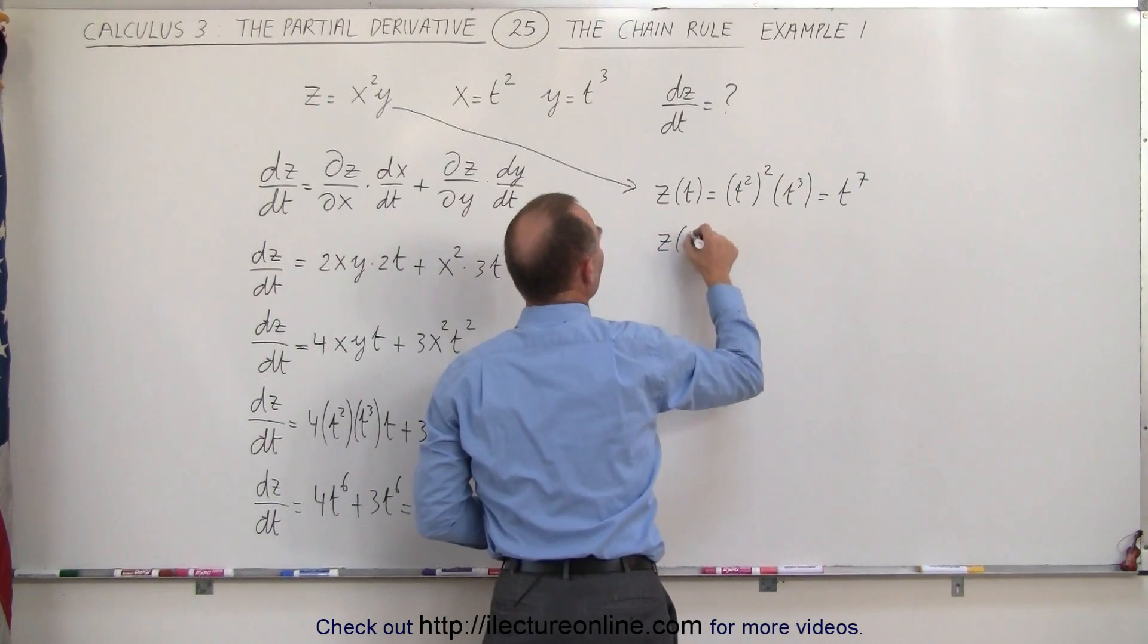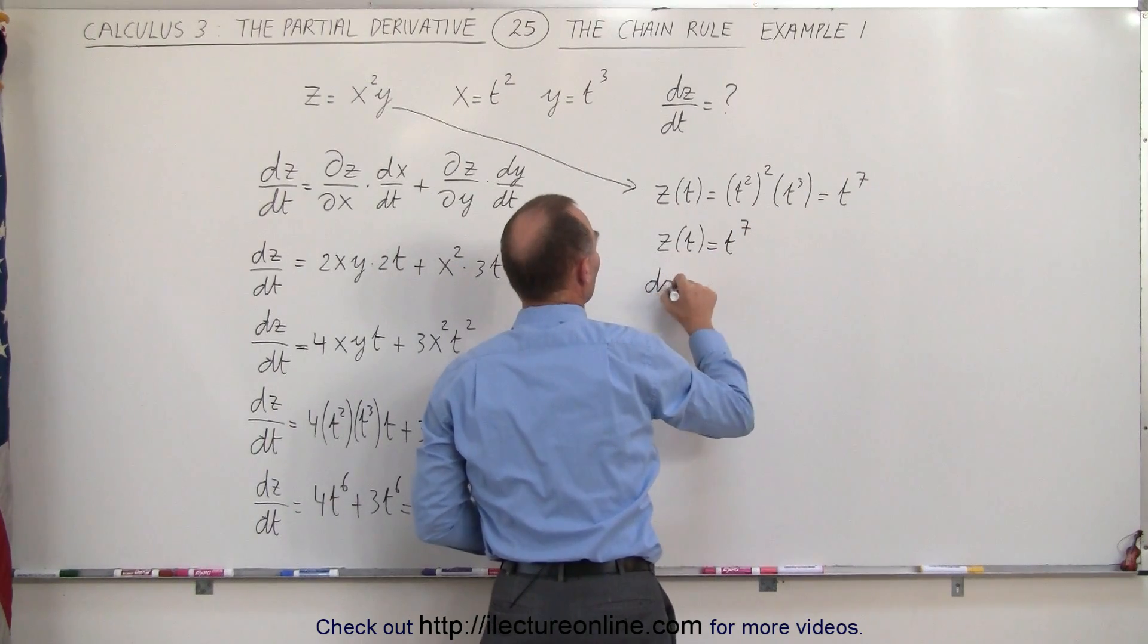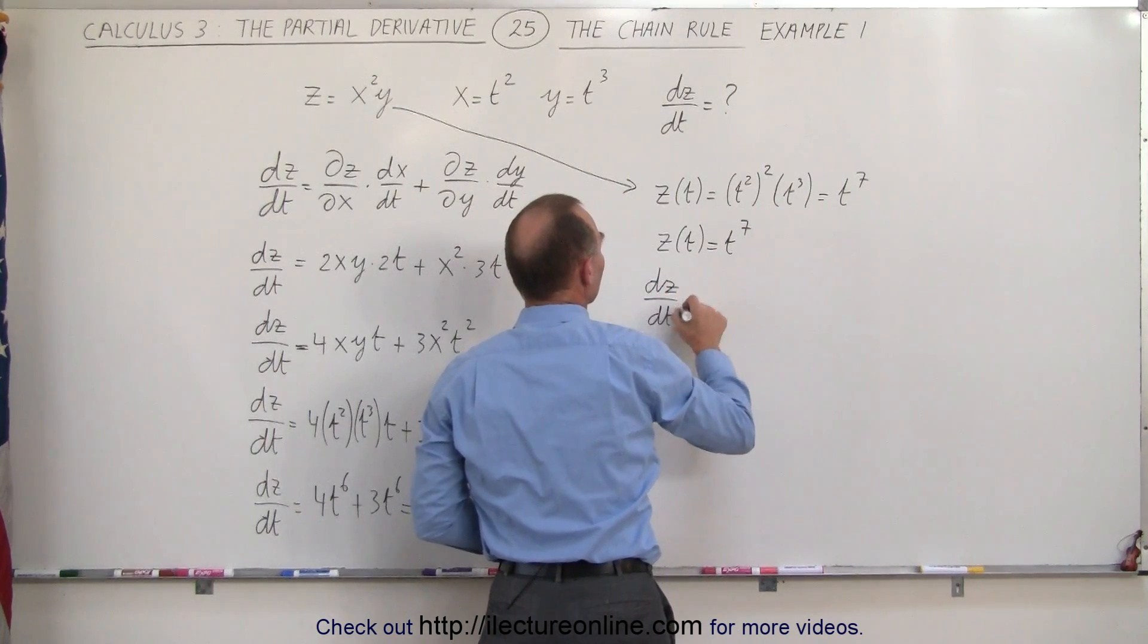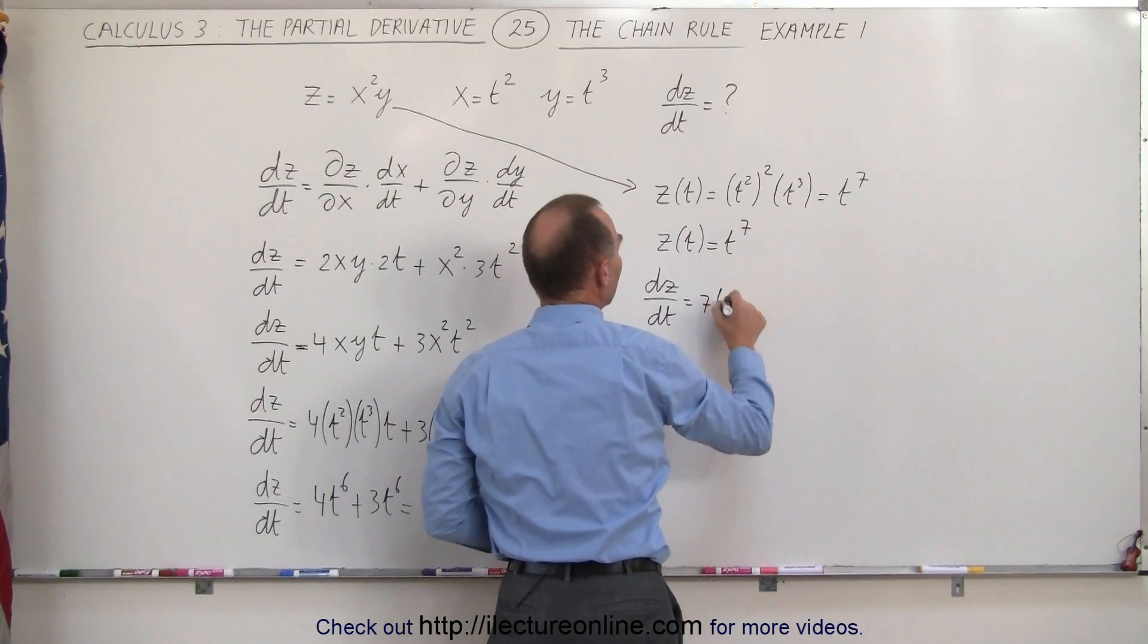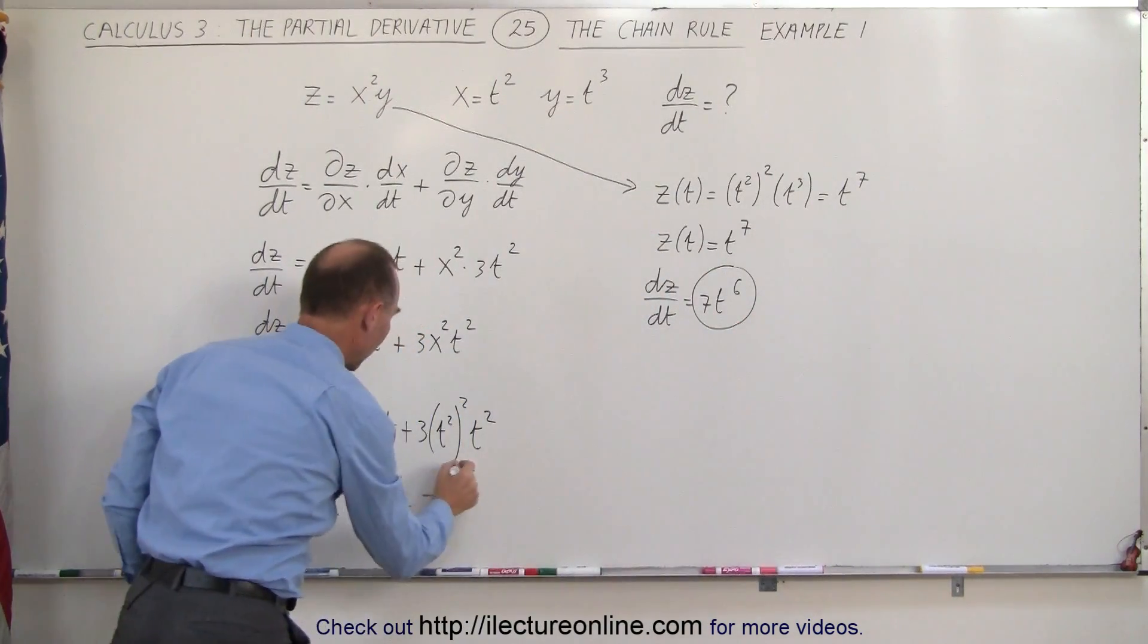So if z as a function of time is equal to t to the seventh, if we now take the derivative dz dt, this gives us 7t to the sixth power, and of course that should be equal to what we got over here.